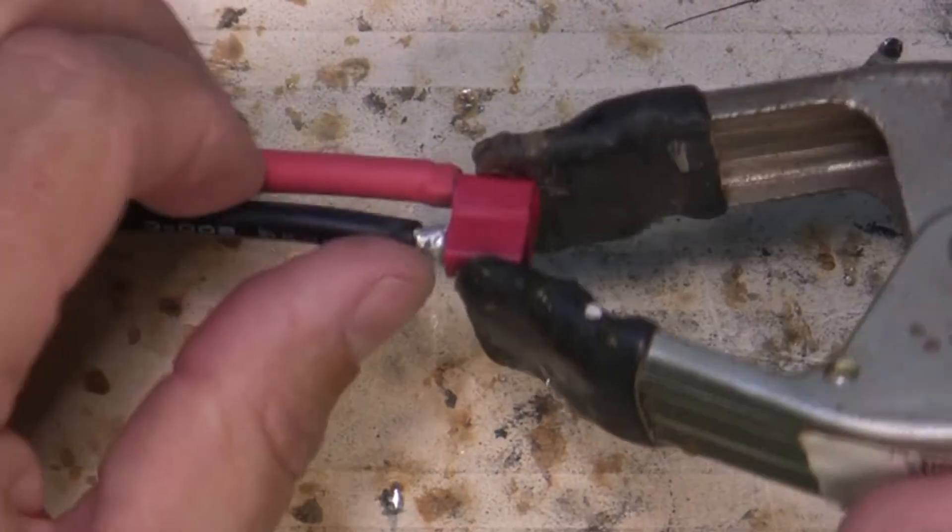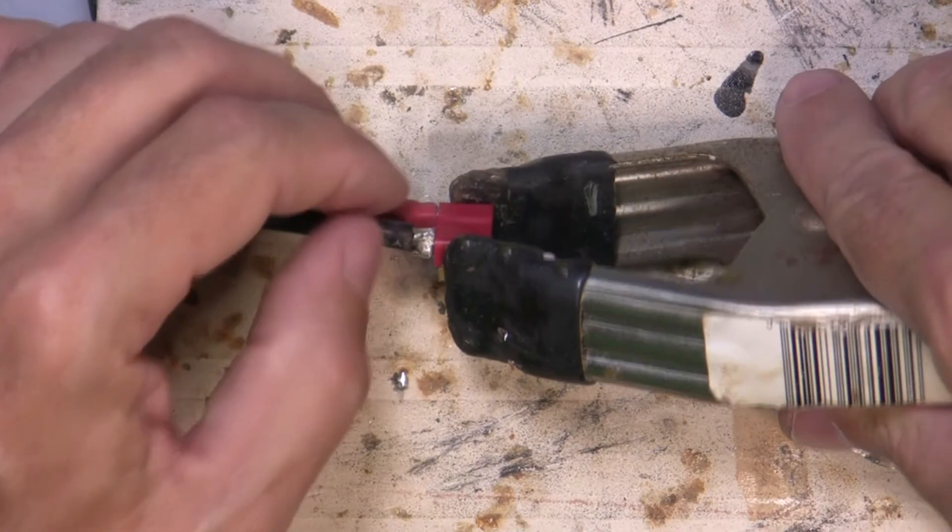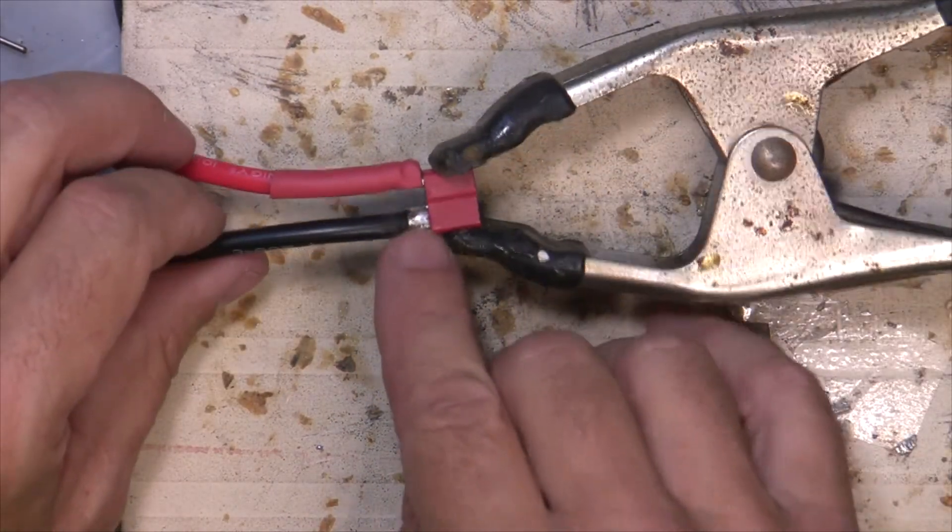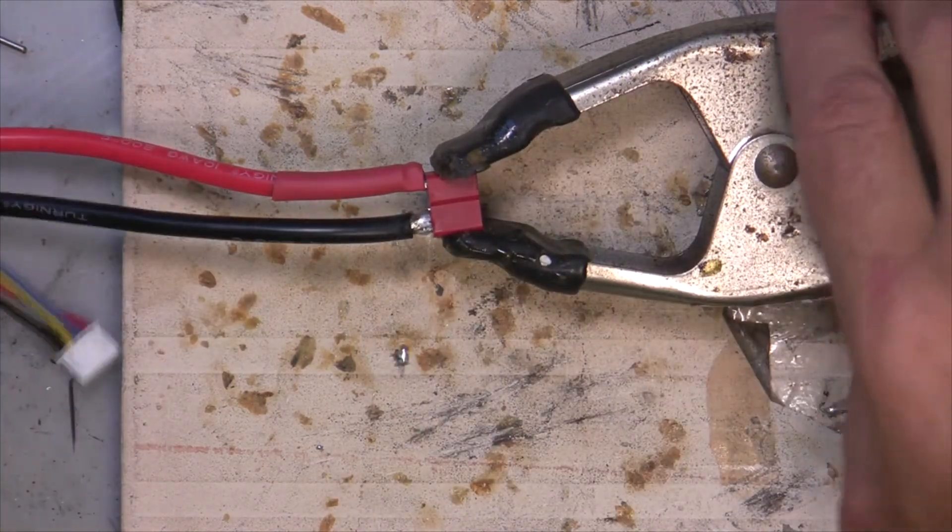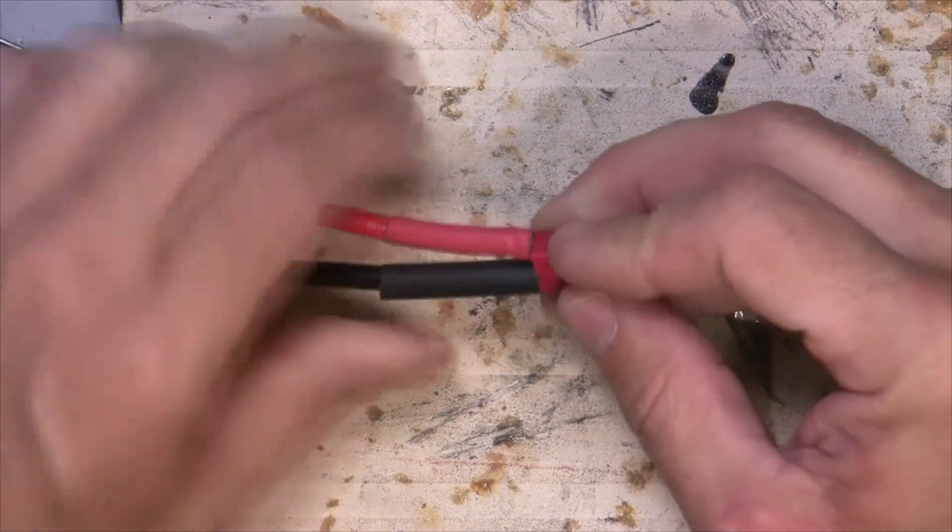Okay, so now this one doesn't look like it needs any trimming with the Dremel tool. As you can see, by putting it on this side of the connector, it gave you more room so it doesn't stick up.